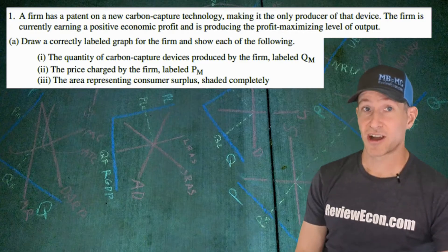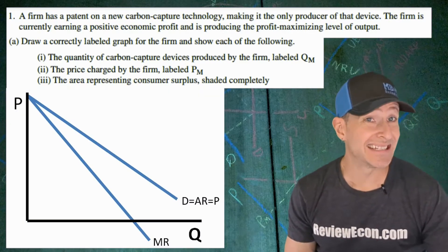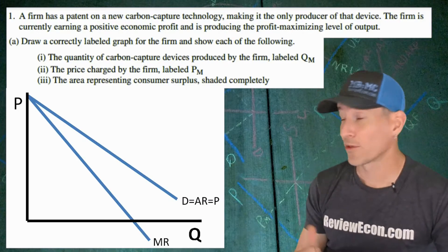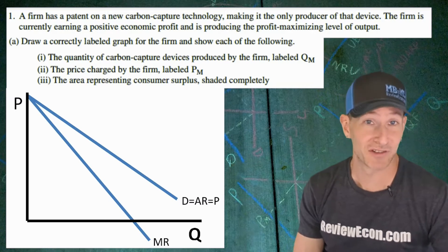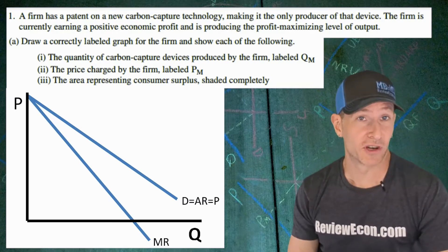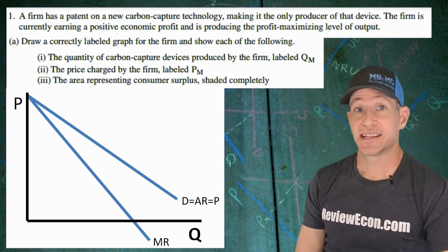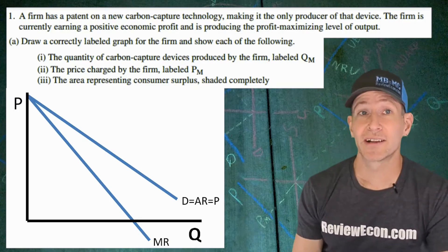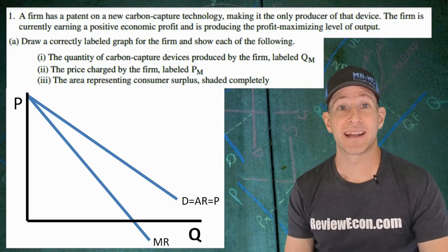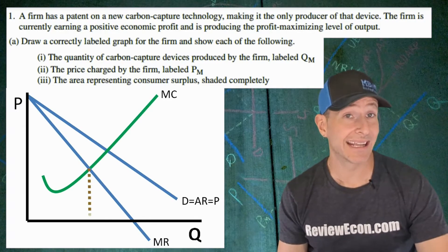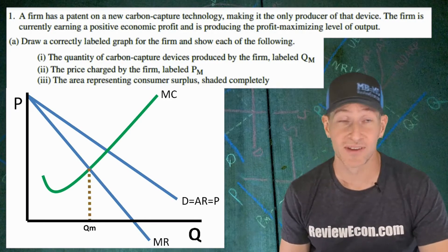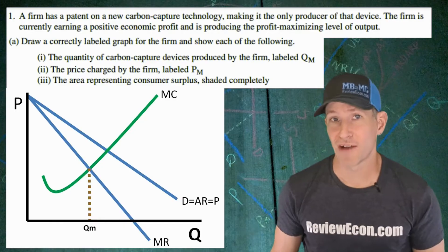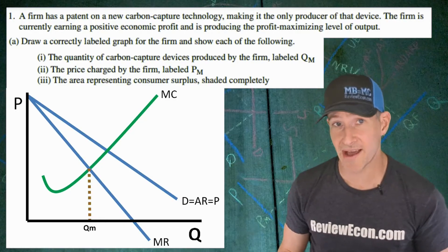When we draw this graph, we need to start off with our axes labeled P and Q and have a downward sloping demand curve — also labeled AR for average revenue and price, since all three of those are equal. We have our marginal revenue curve below the demand. Since we're going to be shading consumer surplus, it's best to have the demand curve touching the y-axis so we have a clear triangle for consumer surplus. Once we have our demand and marginal revenue curve drawn, add in the marginal cost curve, find the intersection between MC and MR, drop down, and that is our profit maximizing quantity labeled QM.